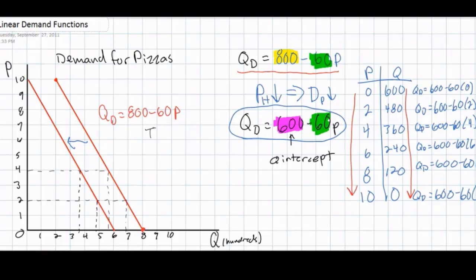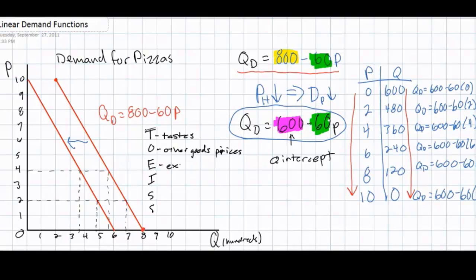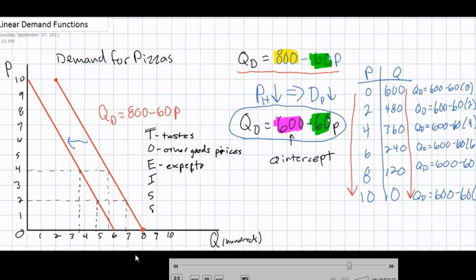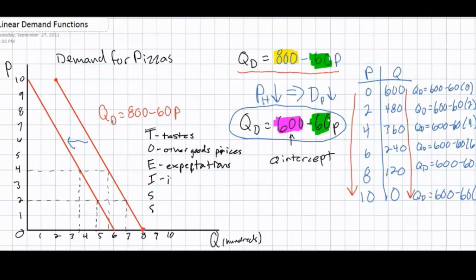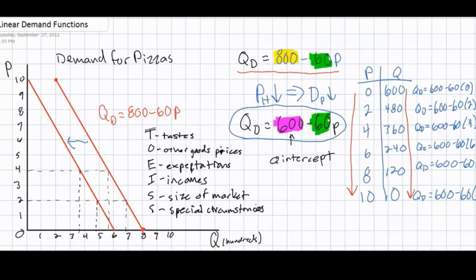What are the factors that can cause the demand for a good to change? The non-price determinants of demand can be summarized using the acronym TOEISS: tastes and preferences of consumers, other related goods, prices including complements and substitutes, the expectations of consumers of future prices and future incomes, the current incomes of consumers — with a direct relationship for normal goods and an inverse relationship for inferior goods — the size of the market referring to the number of consumers, and special circumstances. These six factors are what we call the determinants of demand, or the demand shifters.